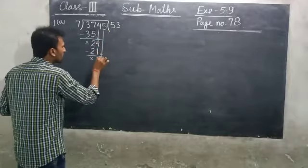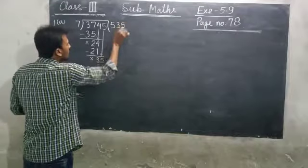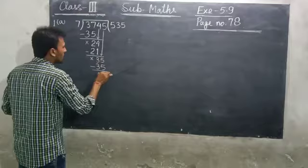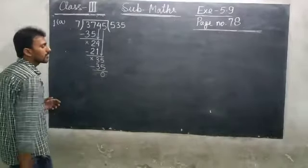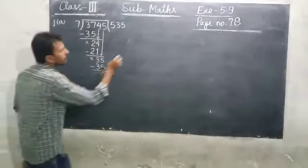35. 7 into 35 is 5 times. 35 minus 35 equals zero. Remainder is zero, cancel.